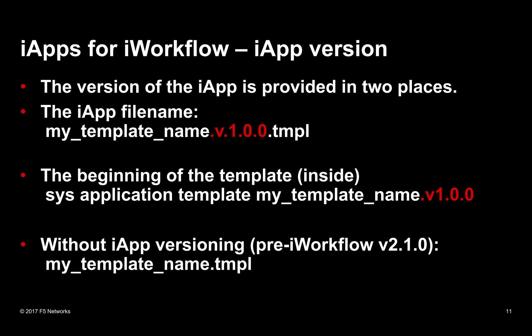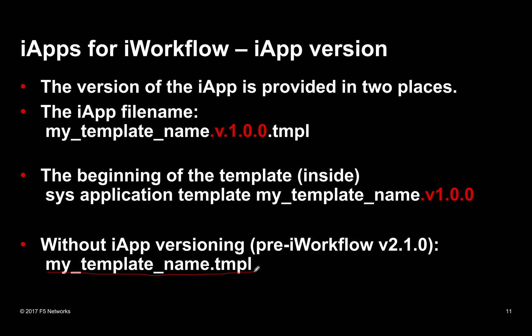For the version of the iApp itself, we actually pluck that out of the template's name. What we require is a specific format — you'll see v1.0.0 in the name, using dots or underscores. Previously your template might just have been called something like 'my_template_name', but now you're going to have to specify a version number. In addition, inside the template it references itself, so you'll need to do a search inside the template for the template's name and make sure that also references the version wherever that name is placed.